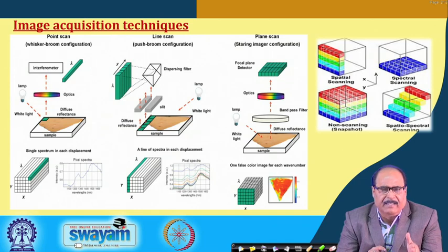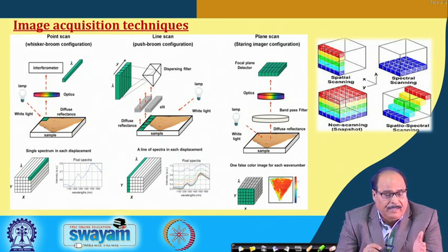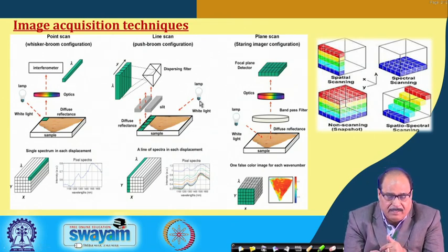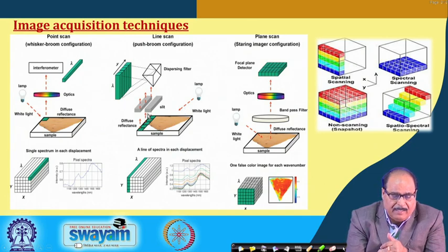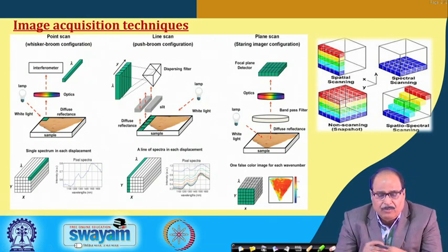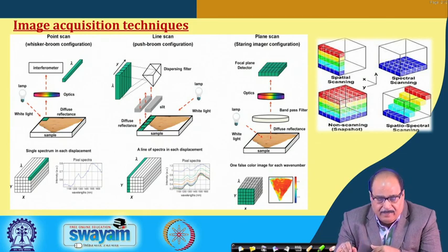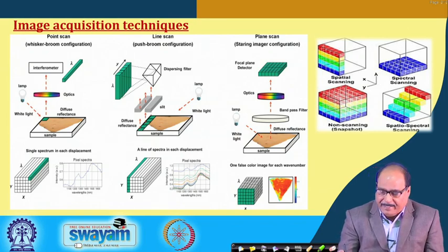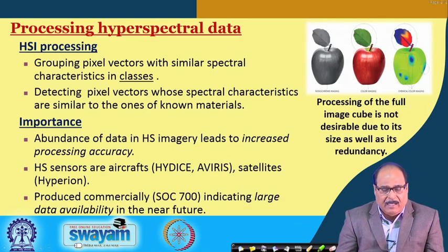There are different types of image acquisition techniques: point scan using a whiskbroom configuration with an interferometer; line scan using a push-broom configuration with dispersing filters, where you can see how the sample image is captured and data sent to dispersing filters to form cubes; and plane scan using a staring imager configuration. Depending on the features of the available equipment, one can use the appropriate technique for acquiring and processing the image.